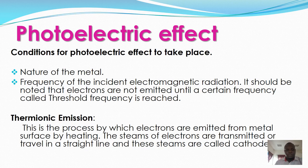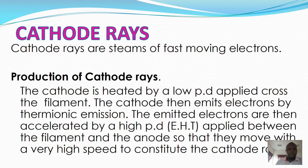We have a process called thermionic emission, which is a process whereby electrons are emitted from the metal surface by heating. The streams of electrons travel in a straight line and these streams are called cathode rays. So when you heat a metal surface it will emit electrons which are called cathode rays, giving us a definition of cathode rays from the previous examples.